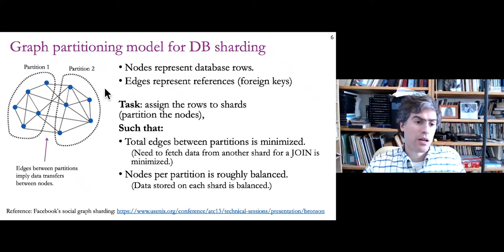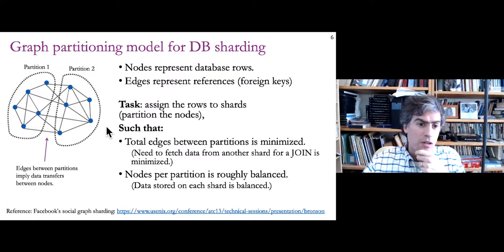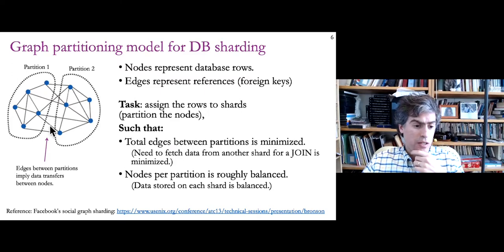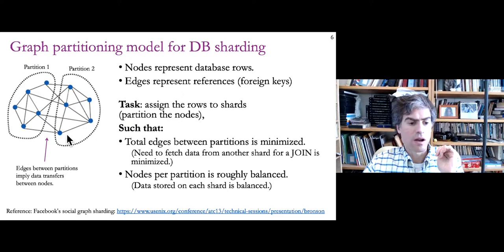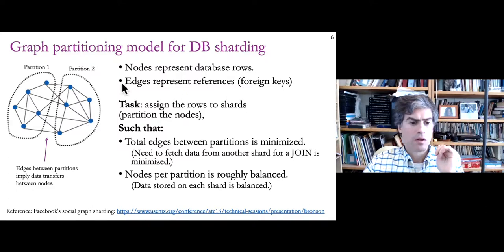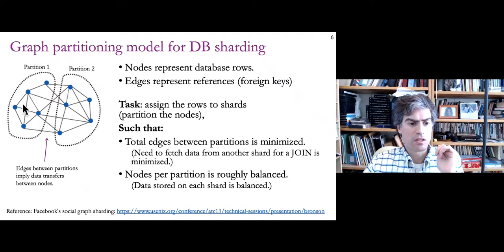What I'm showing here is a graph representation of the rows in a database. The nodes — these blue dots — represent rows, and the edges represent references, i.e., foreign keys. We have many rows in the database, and rows refer to other rows, creating links in this graph. This graph shows the relationship between data rows in the database.